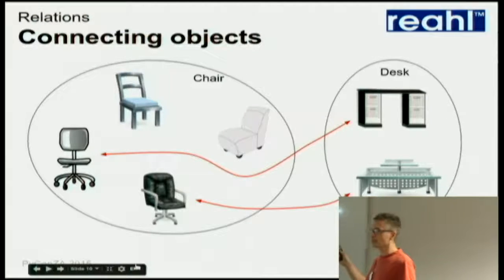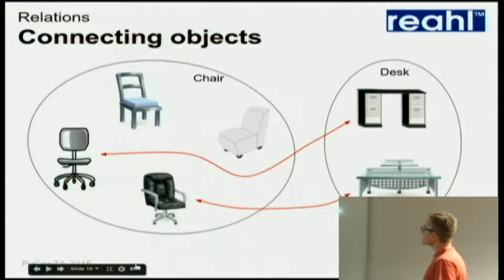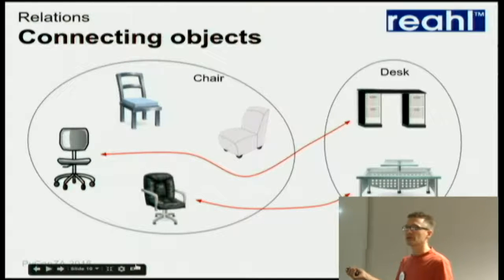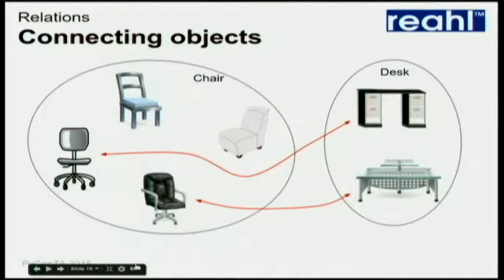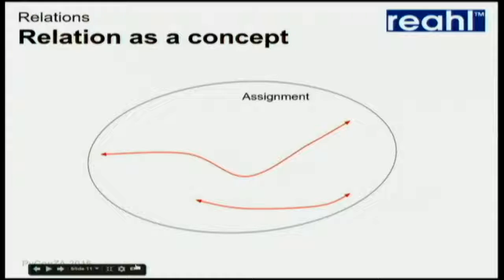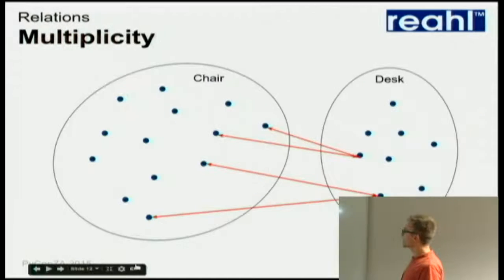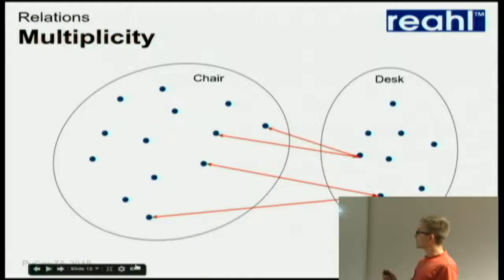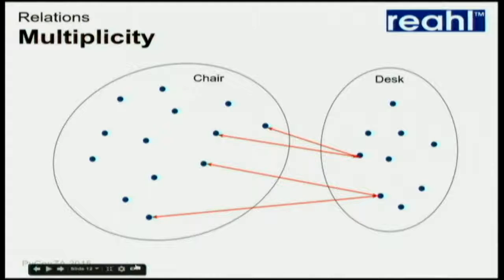The other part is that we can connect objects from one set to another set. For example, we can say that this particular chair is connected or assigned to that particular desk. If you take all the stuff on that slide away and you end up just with the two connections, those are objects too, and there are two of them, so I can call them a set — the concept of assignment of desks to chairs. One thing about these relationships that we often like to specify is this idea of multiplicity: chairs can be only assigned to one desk at a time, but a desk can have many chairs assigned to it.